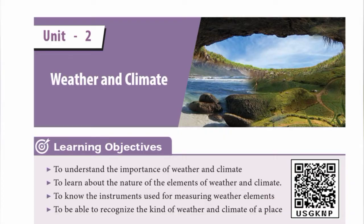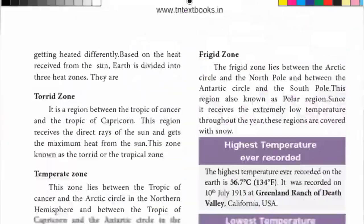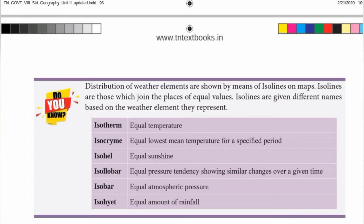The distribution of weather and weather elements are shown by means of iso lines. Iso lines are those which join the places of equal values. Iso lines are given different names based on the weather element they represent.